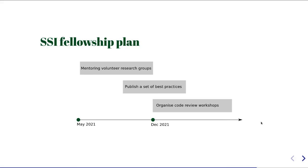To summarize, the objective of my SSI Fellowship would be to establish clear guidelines for code reviews in academia, to raise awareness through blog posts, presentations, and an article, and also to organize a couple of code review workshops. Code reviews are all about software sustainability, and therefore I really believe that the SSI is a natural advocate for code reviewing in academia, and an SSI Fellowship would allow me to act as a champion for code reviews on its behalf.